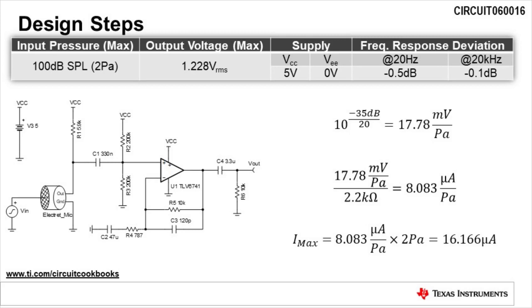The last step in the conversion is to multiply the current per Pascal by the maximum pressure of 2 Pascals. This gives us a maximum output current of the microphone, Imax, to be 16.166 microamps.